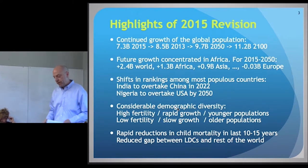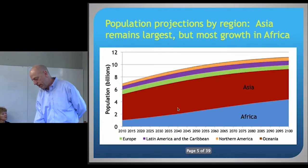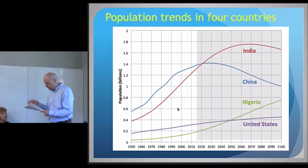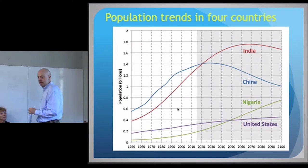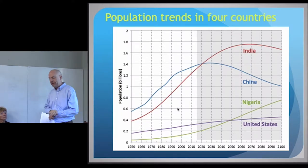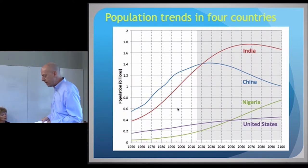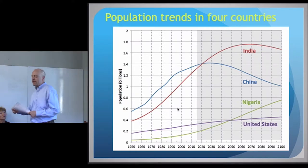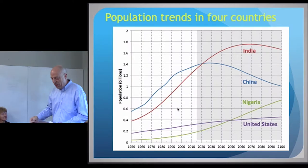A third key point is shifting rankings among the most populous countries. India is expected to overtake China in or around 2022. Nigeria will overtake the USA, probably by 2050. The UN and others have projected for a long time that India's population would overtake China, but we recently moved that date forward because of revisions to fertility assumptions — slightly lowering China's and raising India's. That combination moved the date forward by six years.